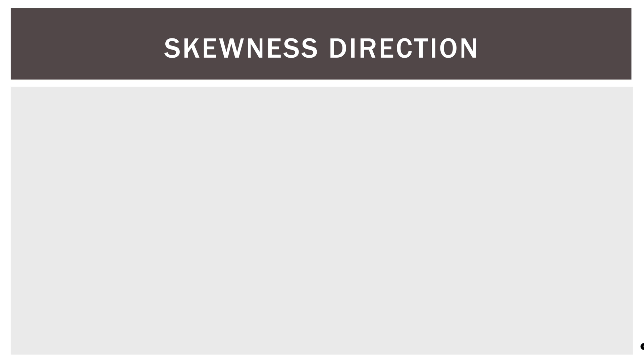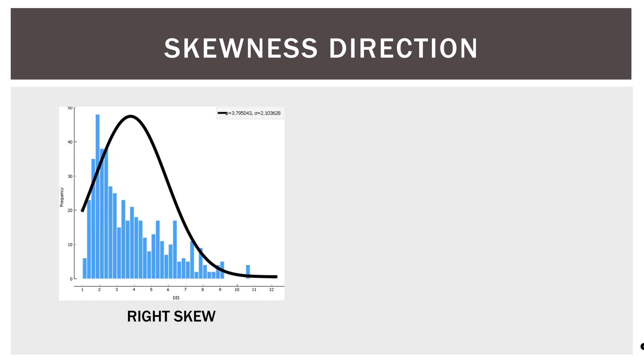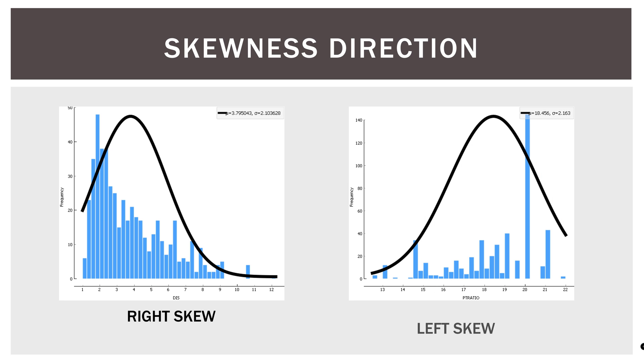In many transformations, we are trying to un-skew our data. So reminder that a right-skew distribution has a long tail to the right, and a left-skew distribution has a long tail to the left.